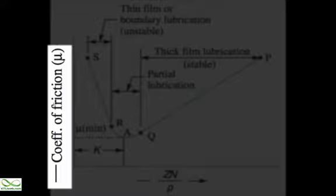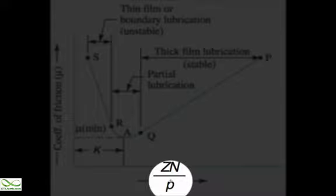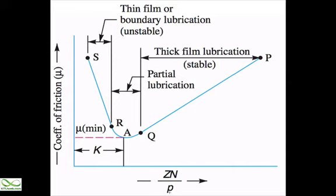On the Y-axis we have the coefficient of friction, and on the X-axis we have the ZN/P value, where Z is the absolute viscosity, N is the speed of the journal, and P is the pressure within the cavity. This ratio is a dimensionless quantity. Suppose we have a high viscosity and high RPM at very low pressure — on that particular situation we have a high value of ZN/P as well as a high value of μ, corresponding to the region from P to Q on the graph.